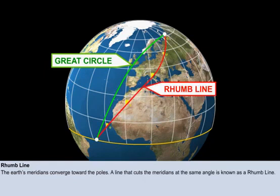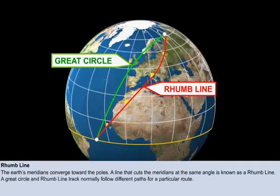A line that does have constant direction is called a rhumb line, and this line will cut each meridian at the same angle. A rhumb line therefore has the advantage of a constant track.